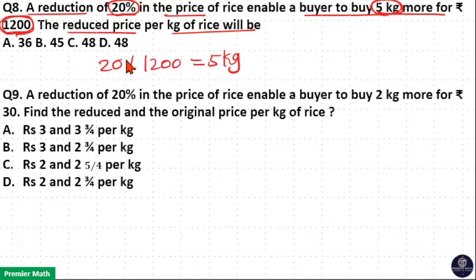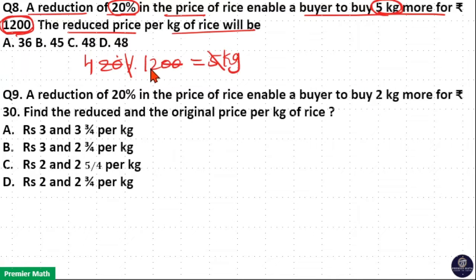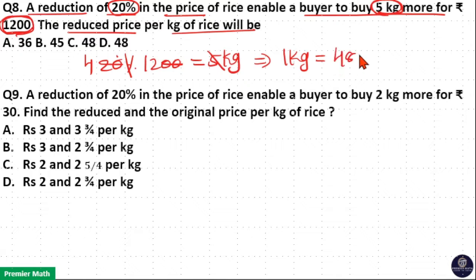Here, % and 00 cancel. 5 goes 4 times in 20, which means 1 kg is equal to 12 into 4, that is Rs. 48. So 1 kg price is equal to Rs. 48.